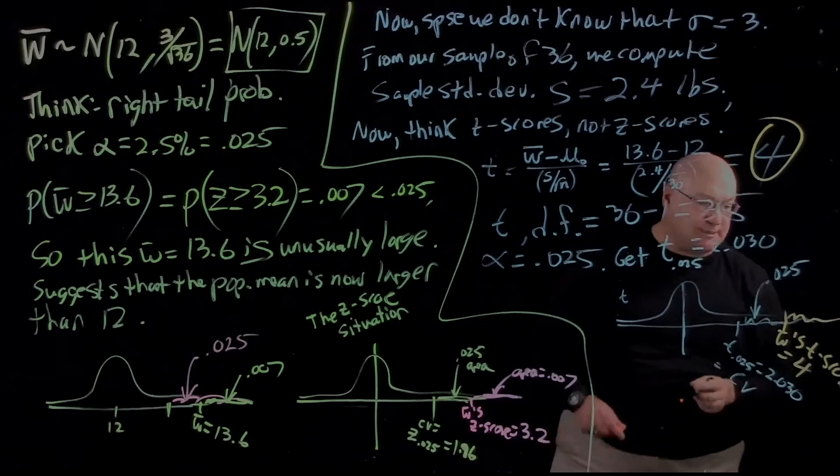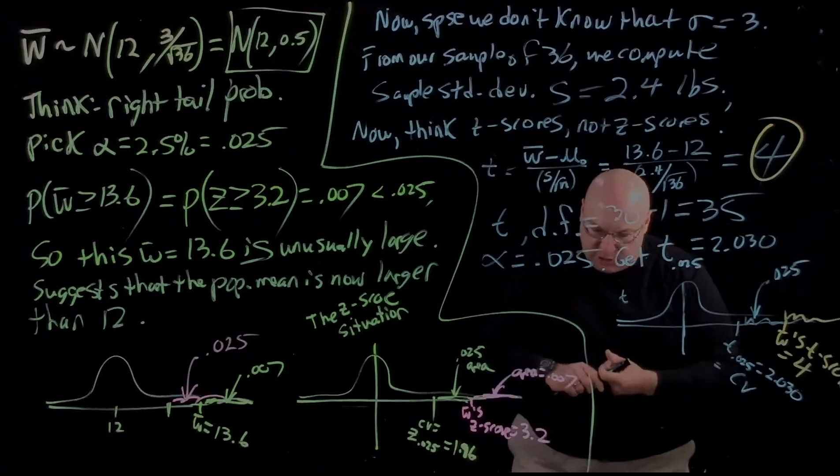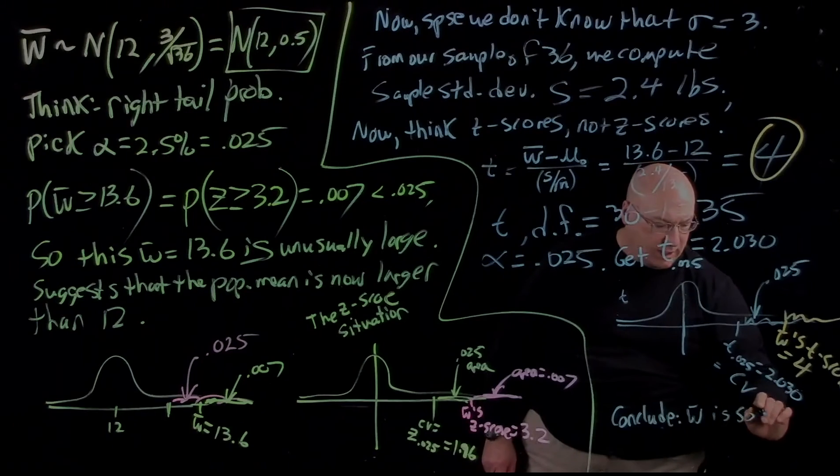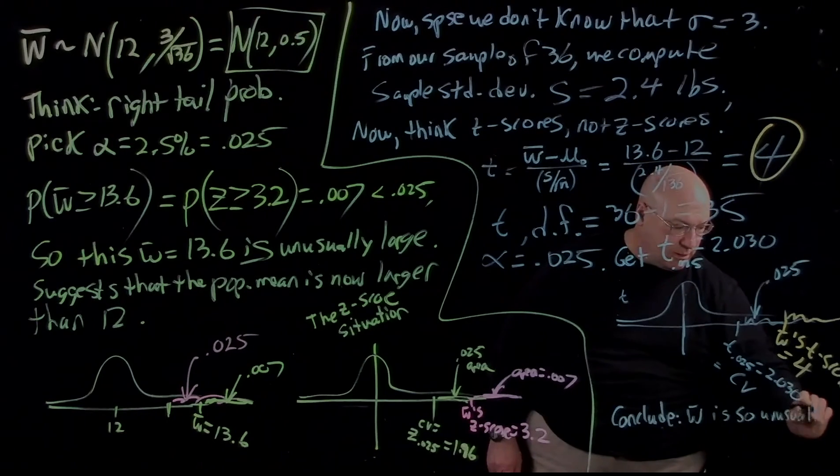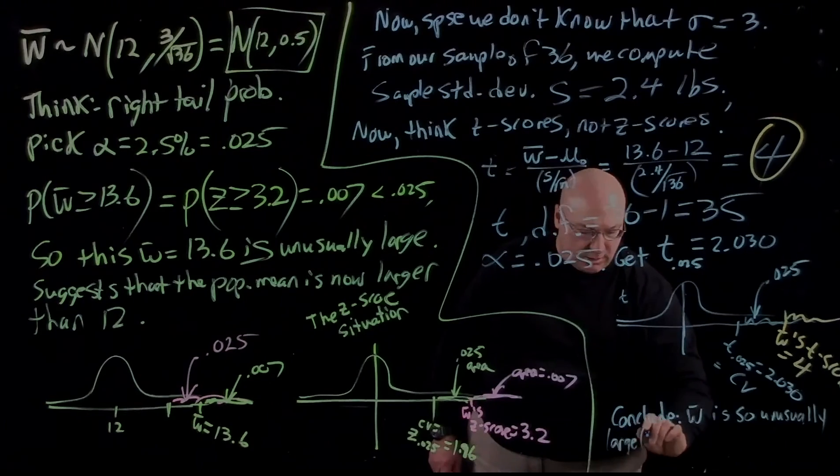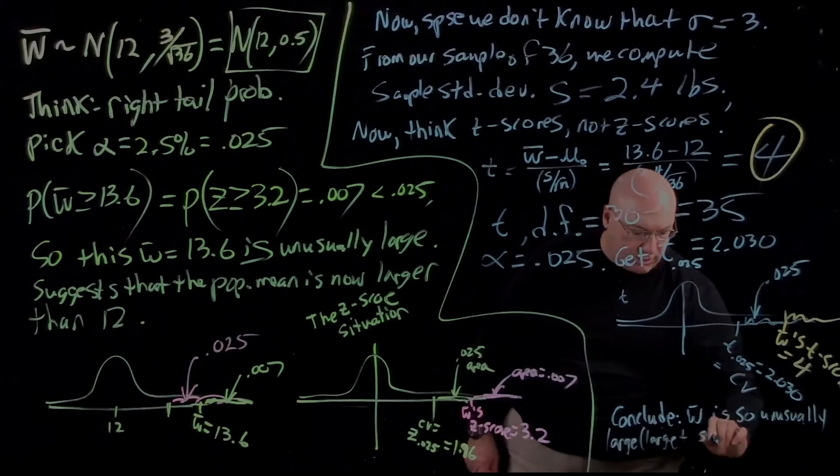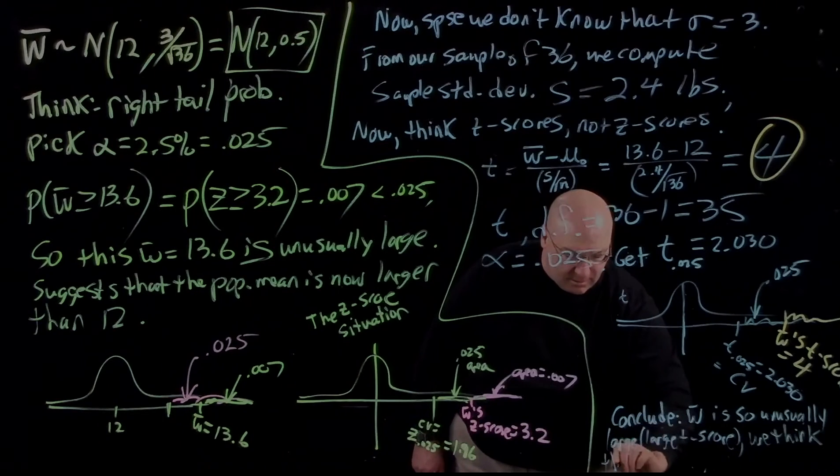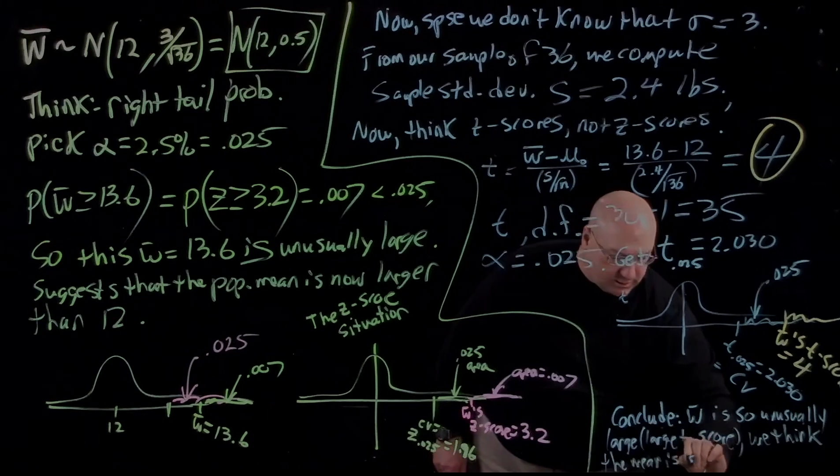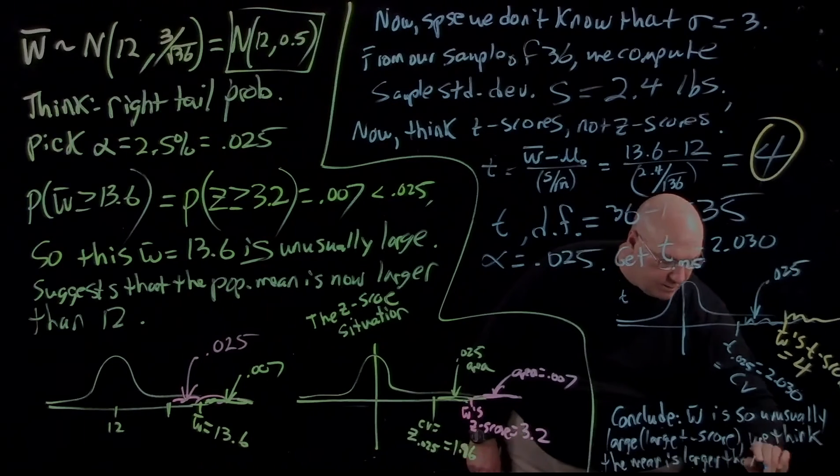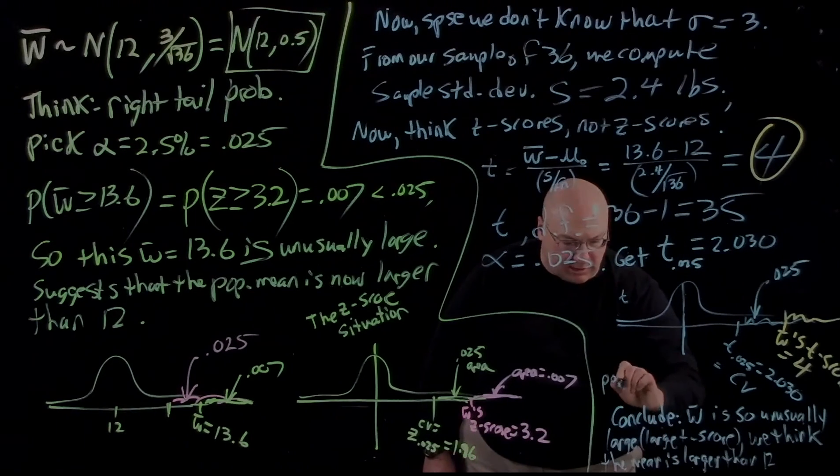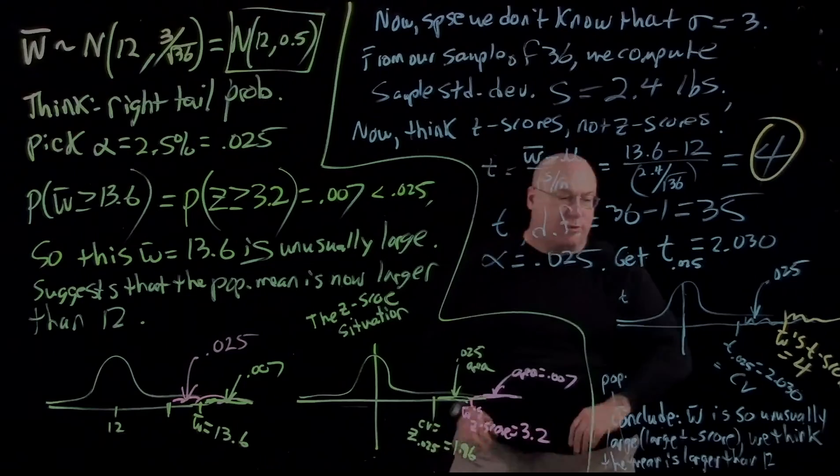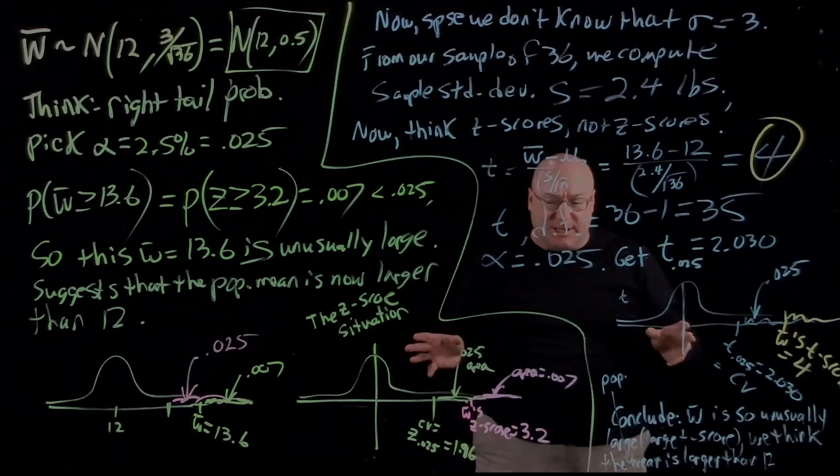And so this area is smaller. So again, in this example, we conclude W bar is so unusually large. It has a large T score. We think the mean, the population mean, is larger than 12. In other words, the fertilizer worked. That's the basic idea.